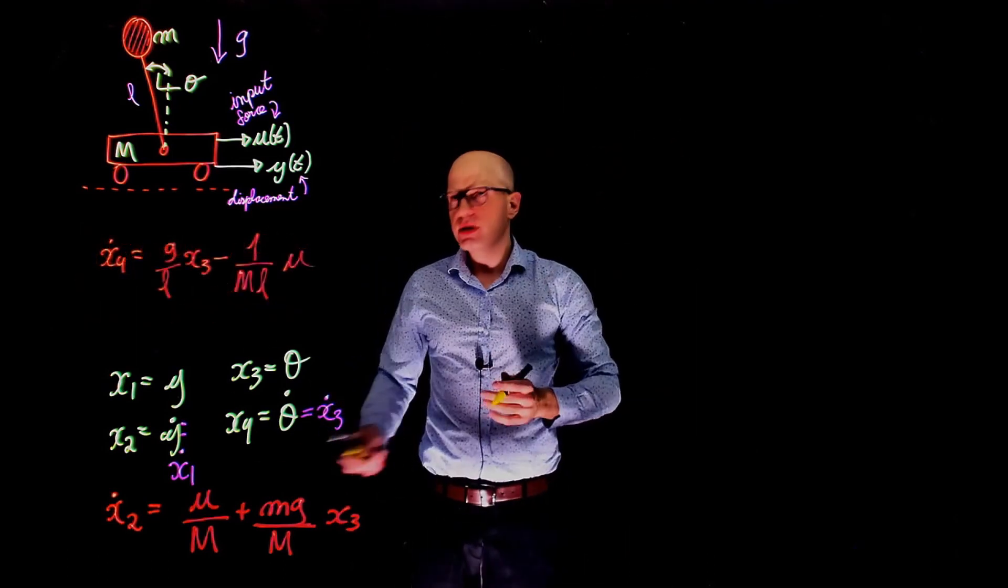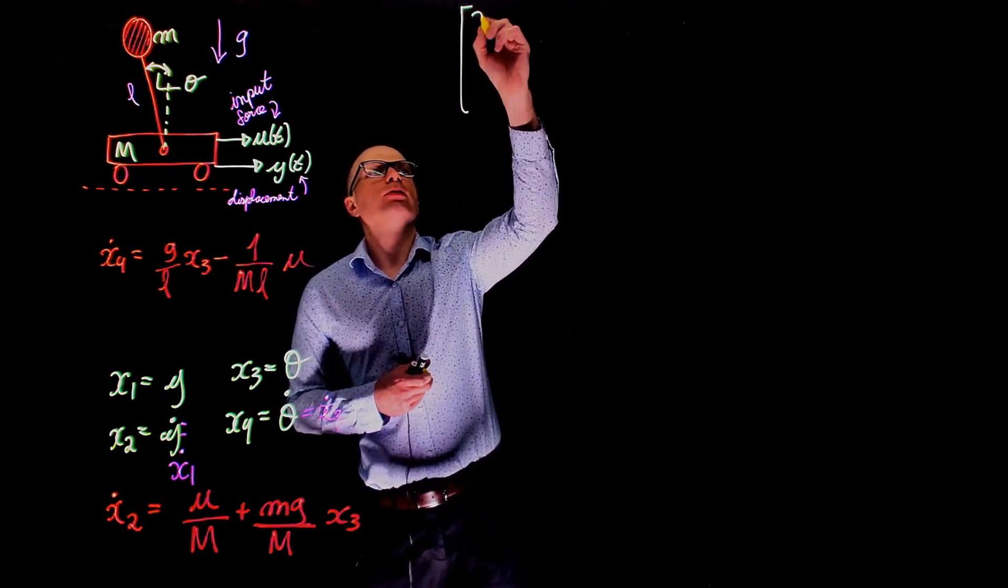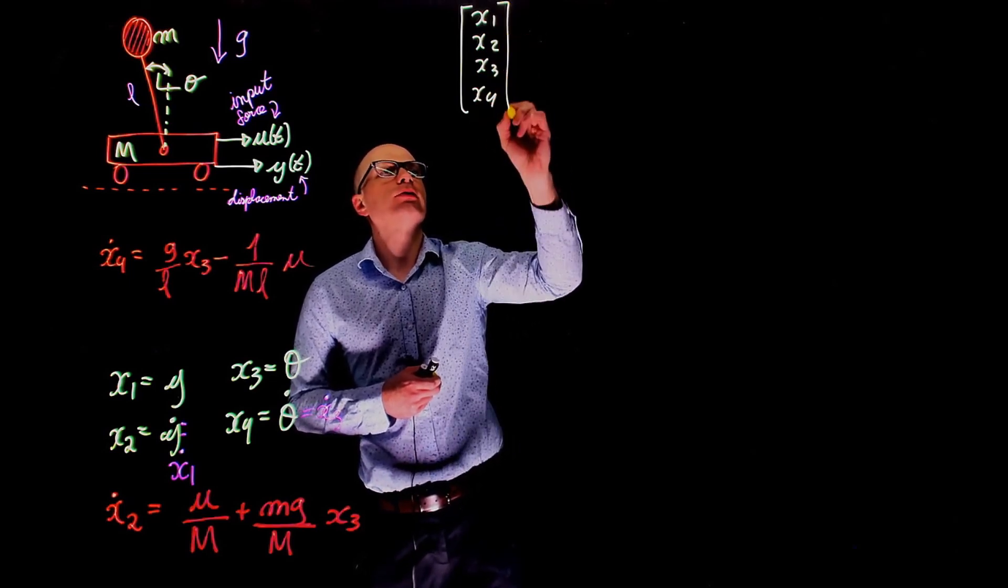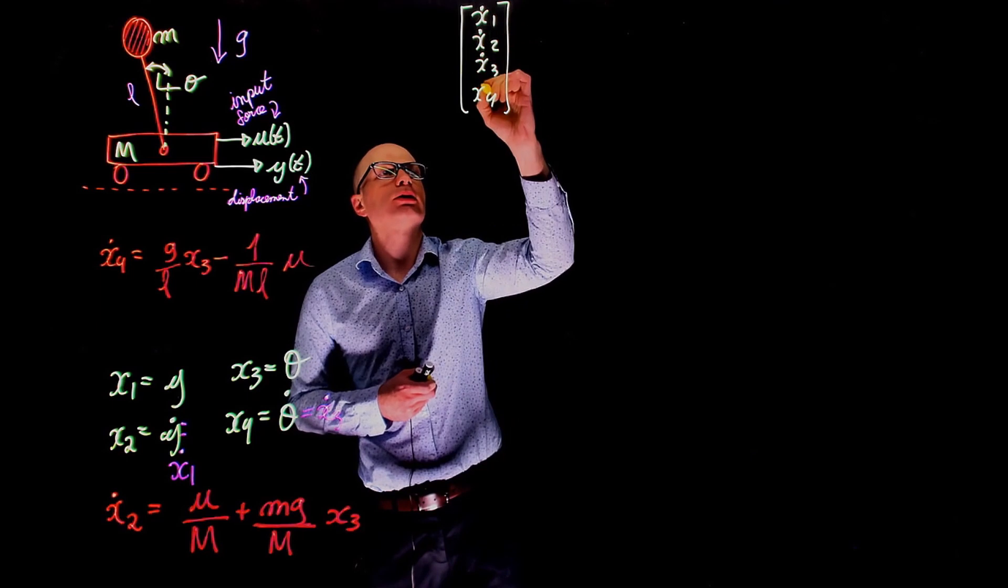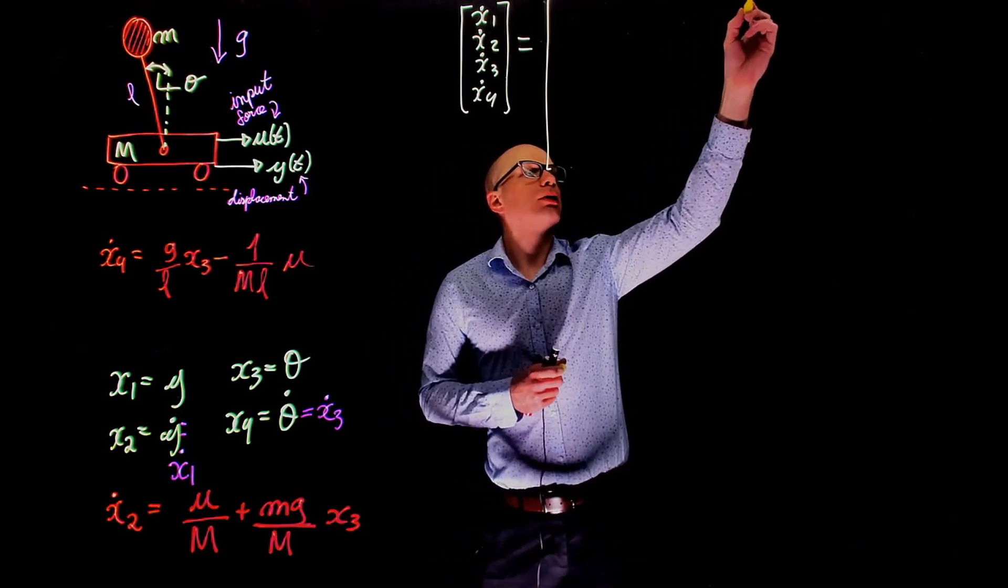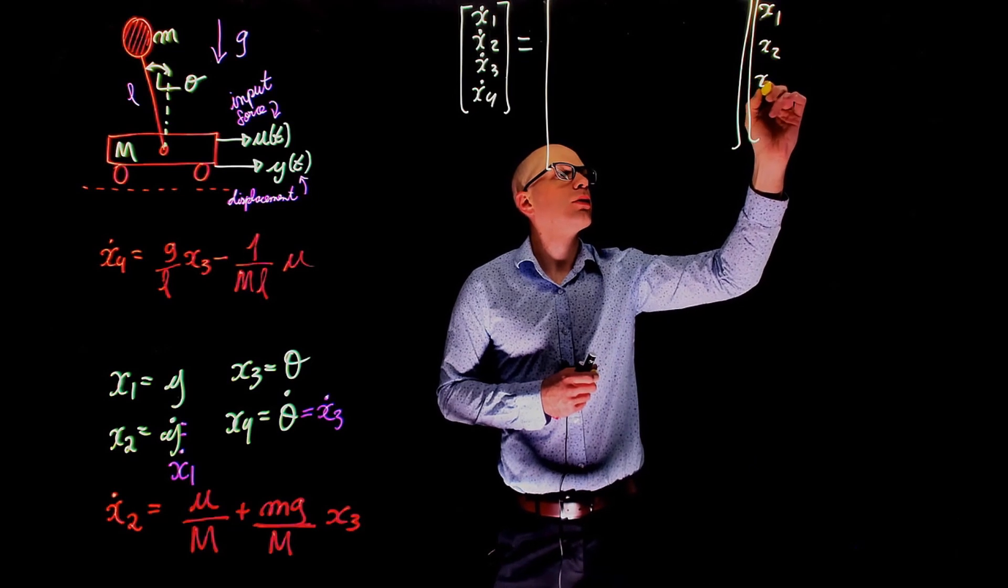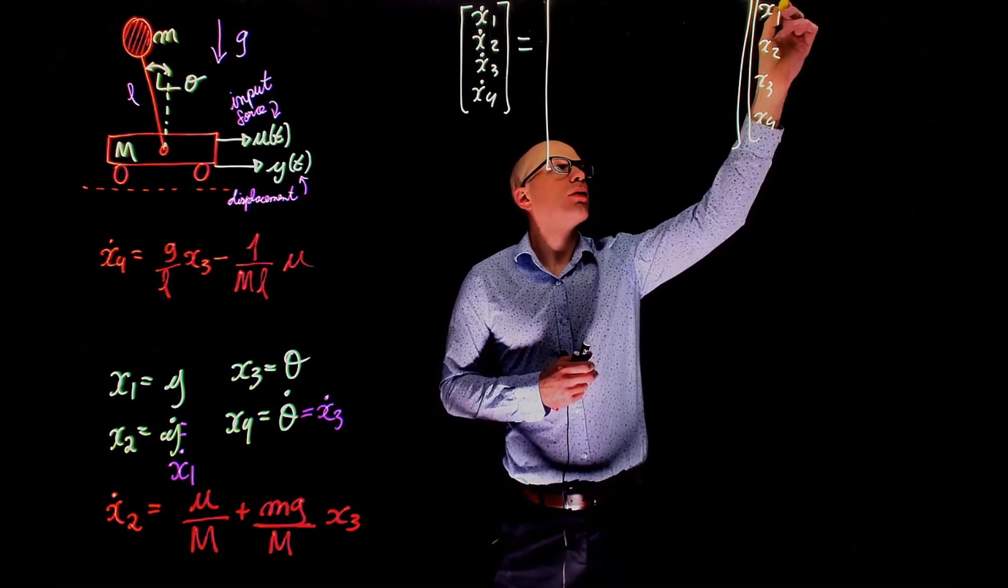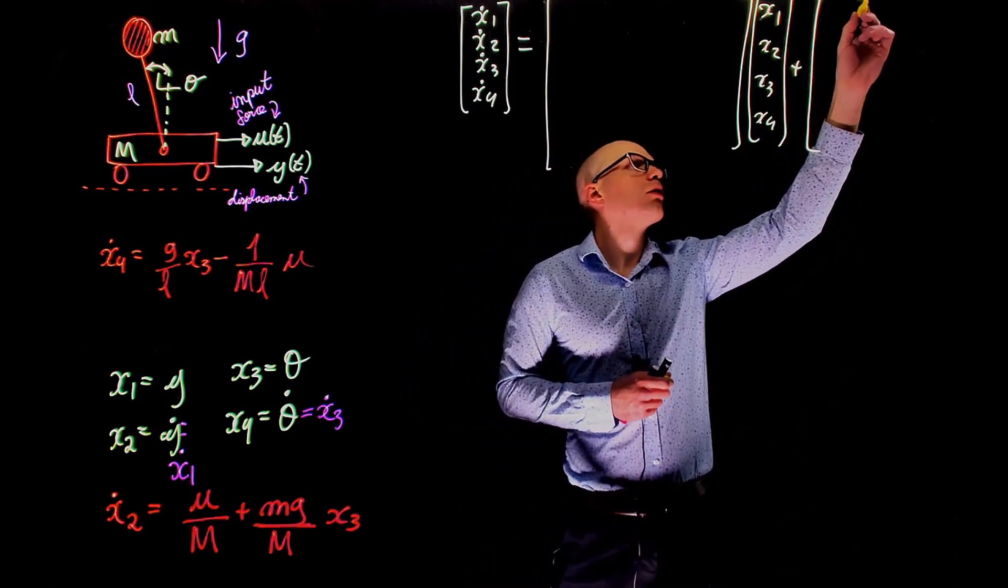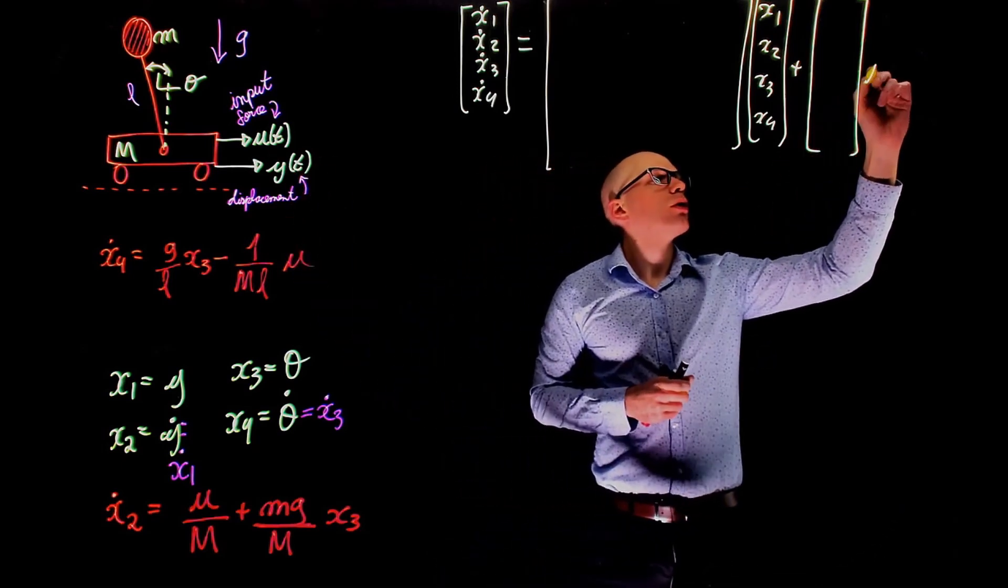Okay, having the four expressions now makes it easy to write them in the matrix form. We are looking for x1, x2, x3, and x4. Their derivatives, in fact, so this is dot dot dot dot equals to something times x and plus matrix B times the input to the system and the input is u of t.